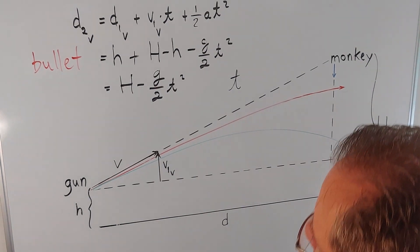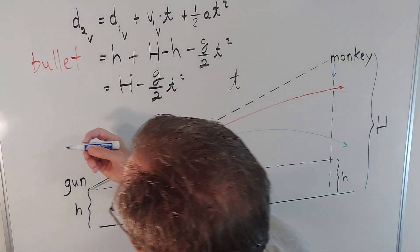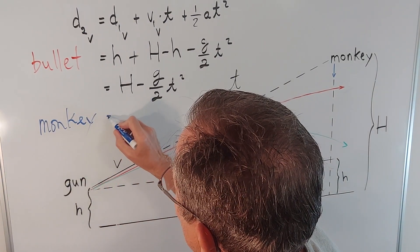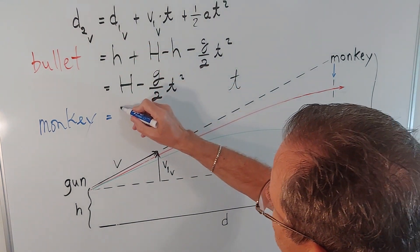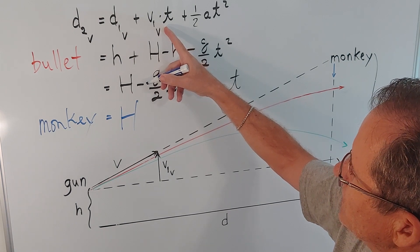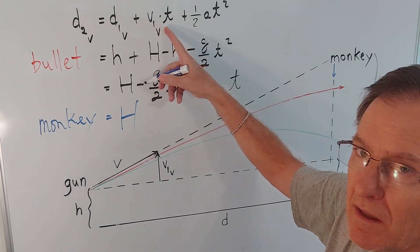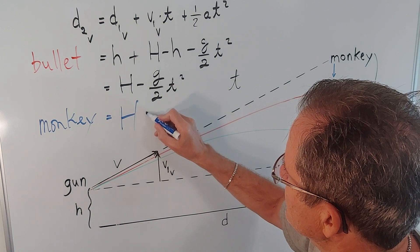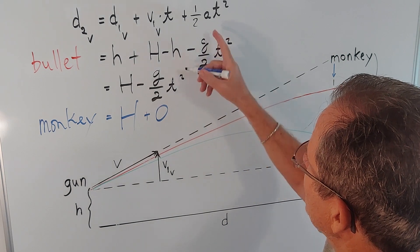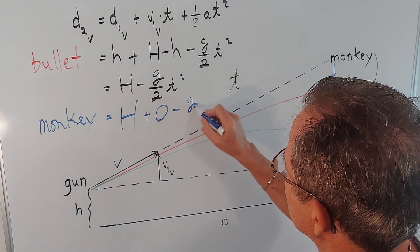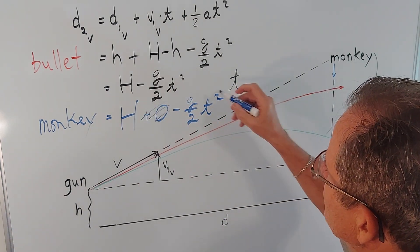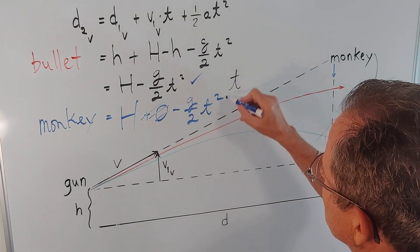Now, what about the monkey? For the monkey, it's going to be equal to the original height, which is capital H, plus the original vertical velocity of the monkey, which is 0, because it's just sitting there and it lets go. And then we have the same term here. So minus g over 2 times t squared. That 0 doesn't make any difference. So what do you know? These are the same.